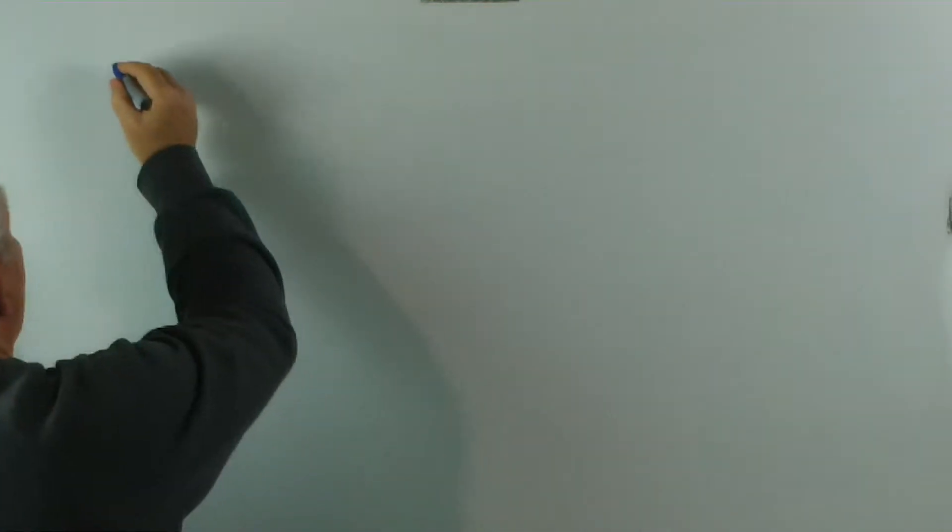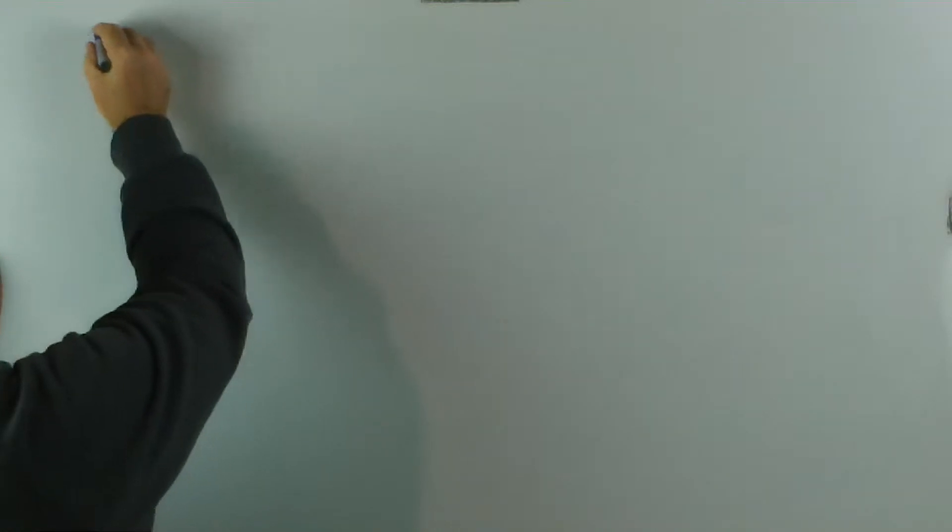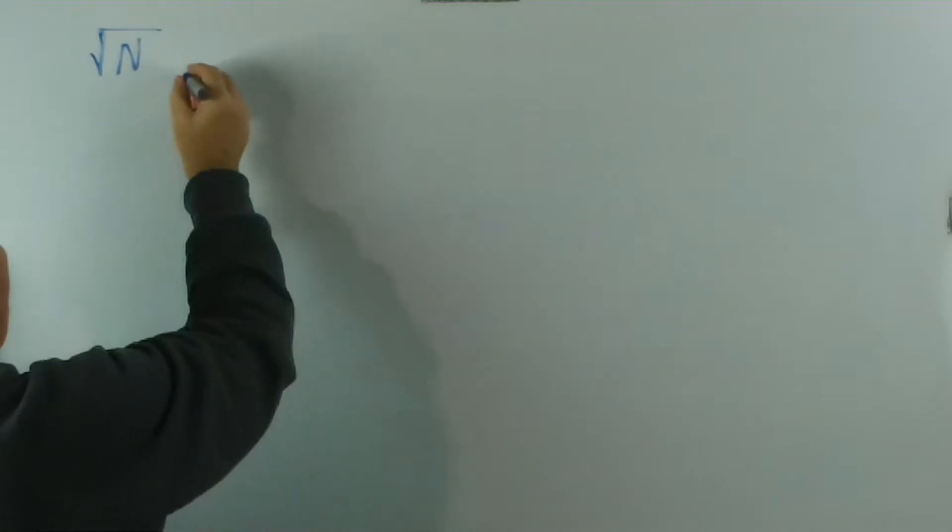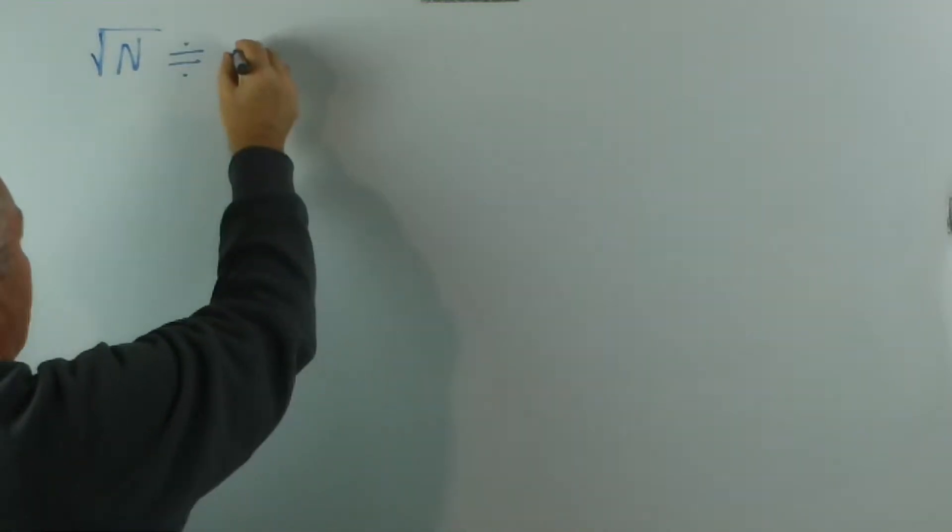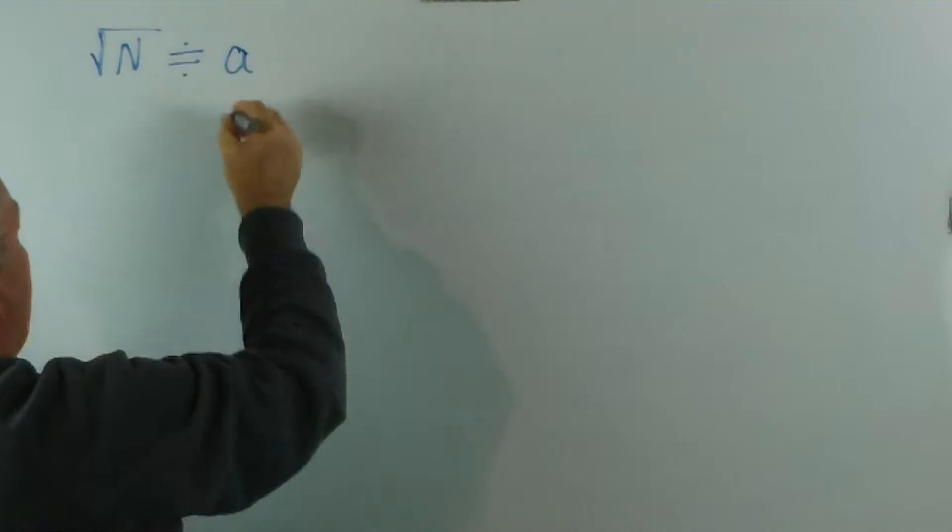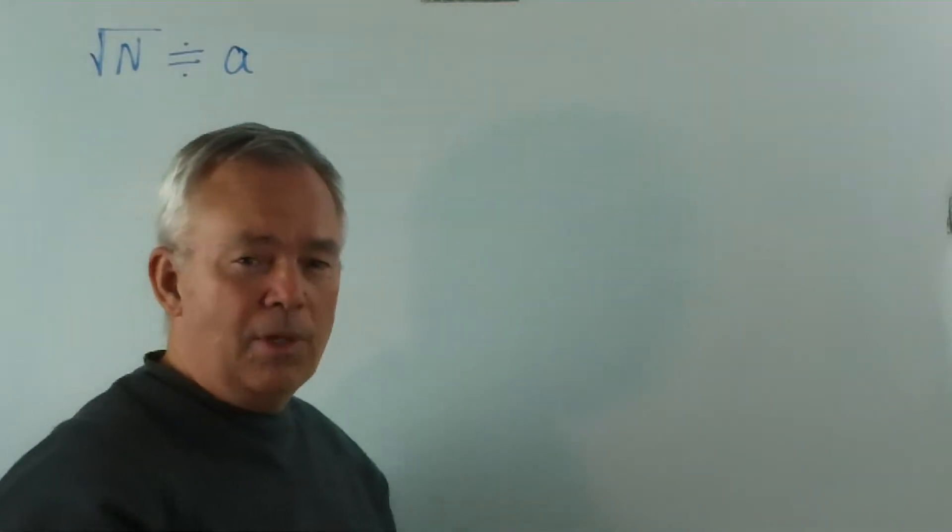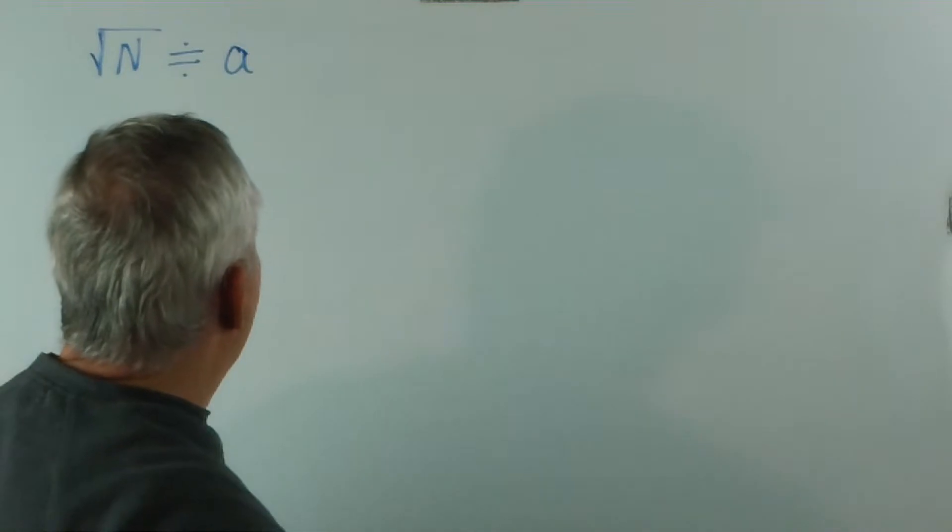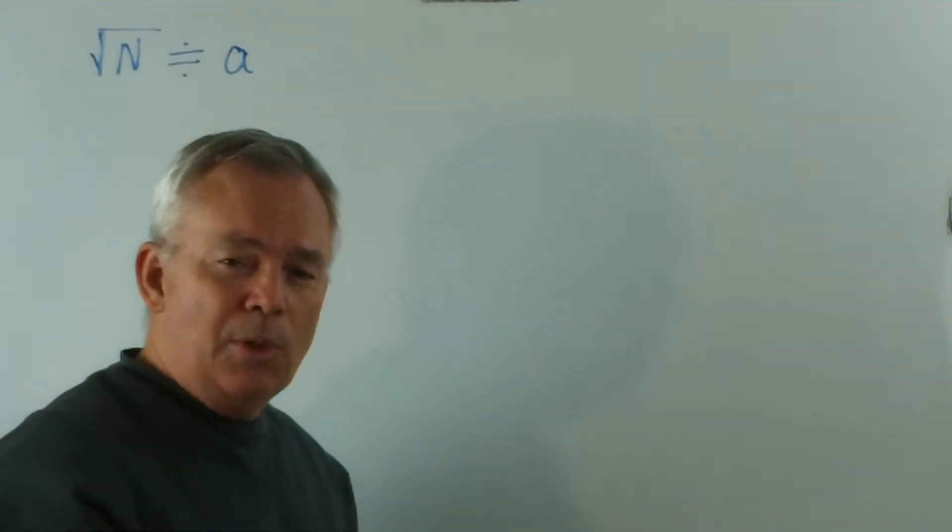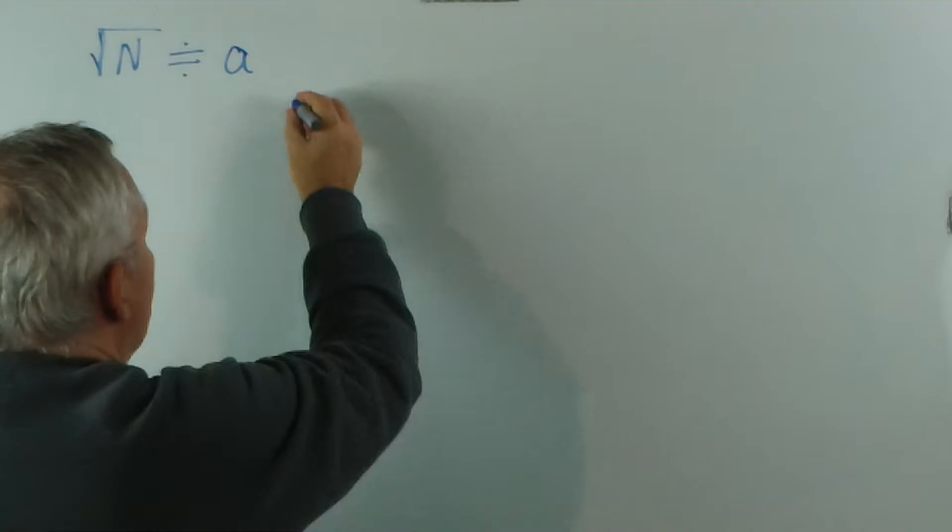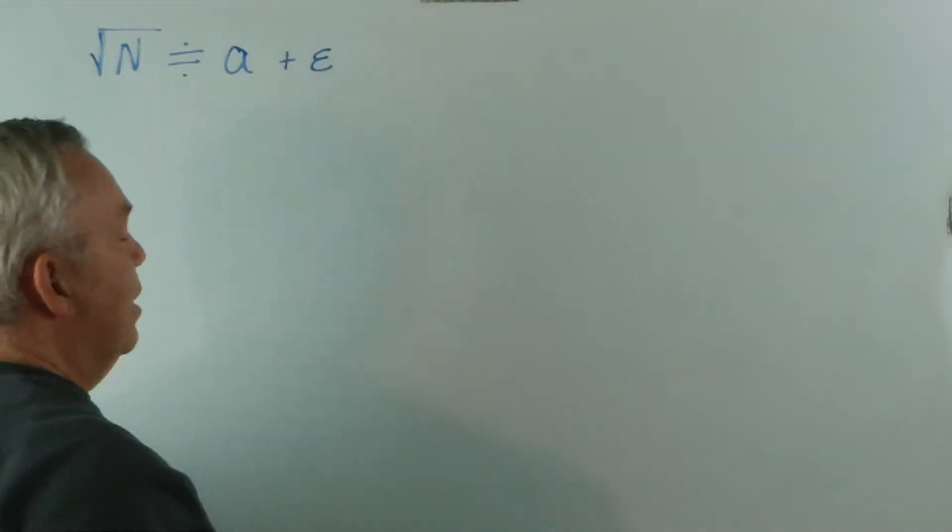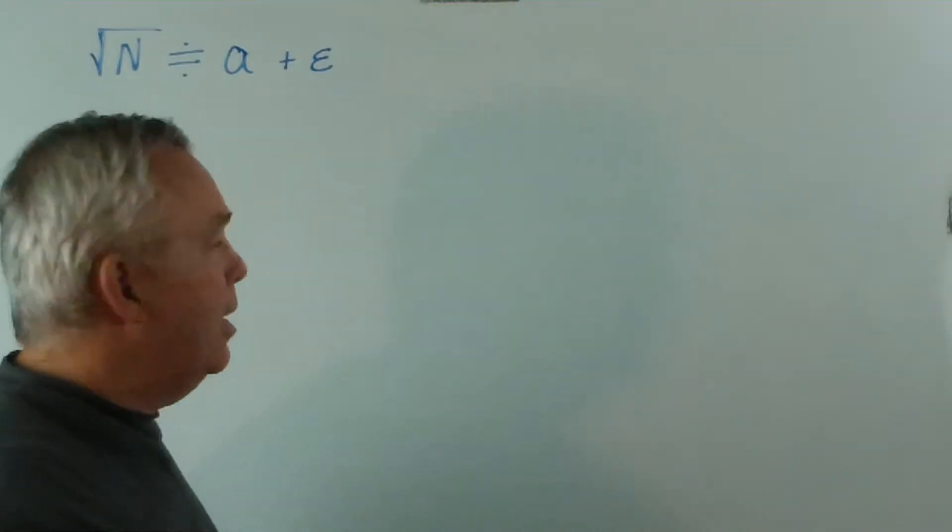We're going to find the square root of a number. I'll show you the method first. We find an approximation, and I've been calling it a in the previous videos. We understand that a is an approximation, and we wish to improve on it by adding what I call an adjustment factor, which I call epsilon.